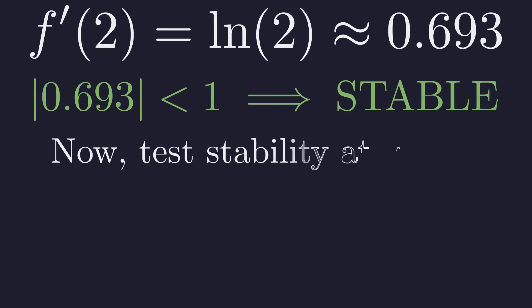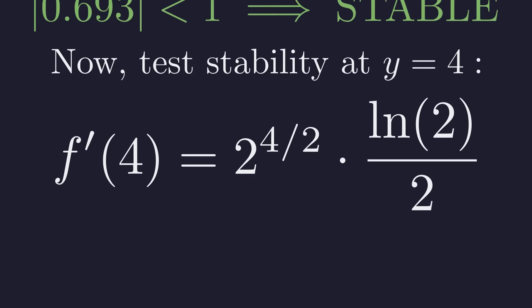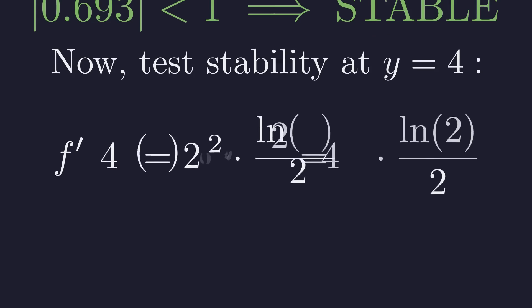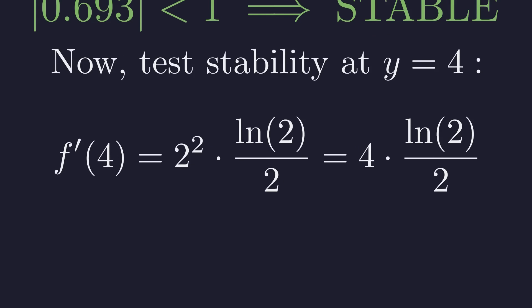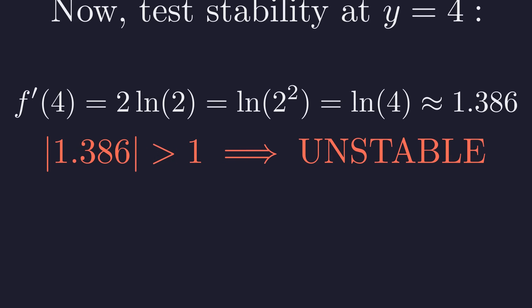Next, we test our second solution, y equals 4. We substitute 4 into the derivative. The exponent becomes 2, and 2 squared is 4. 4 divided by 2 is 2. Using logarithm properties, 2 times the natural log of 2 is the natural log of 4, which is approximately 1.386. The absolute value of this is greater than 1. Therefore, the solution y equals 4 is unstable.